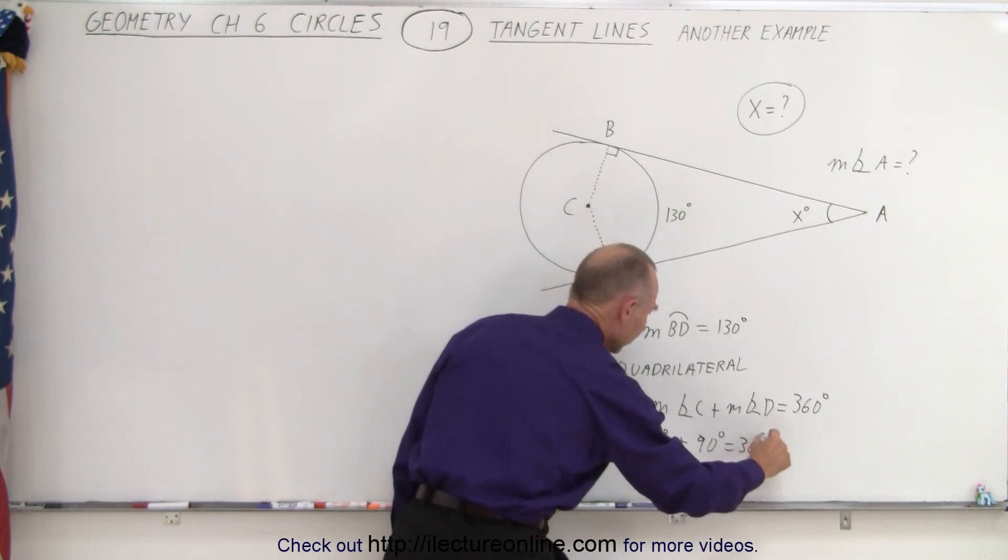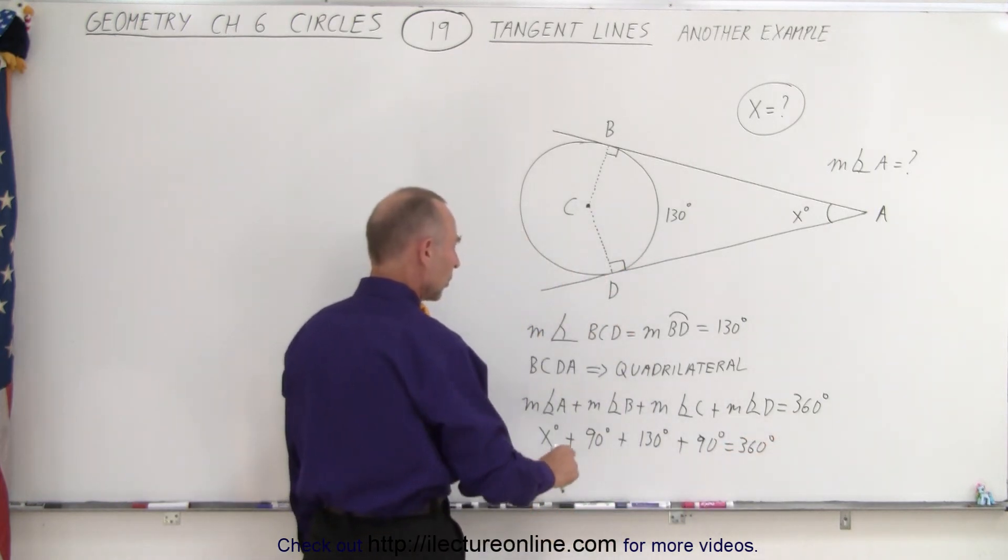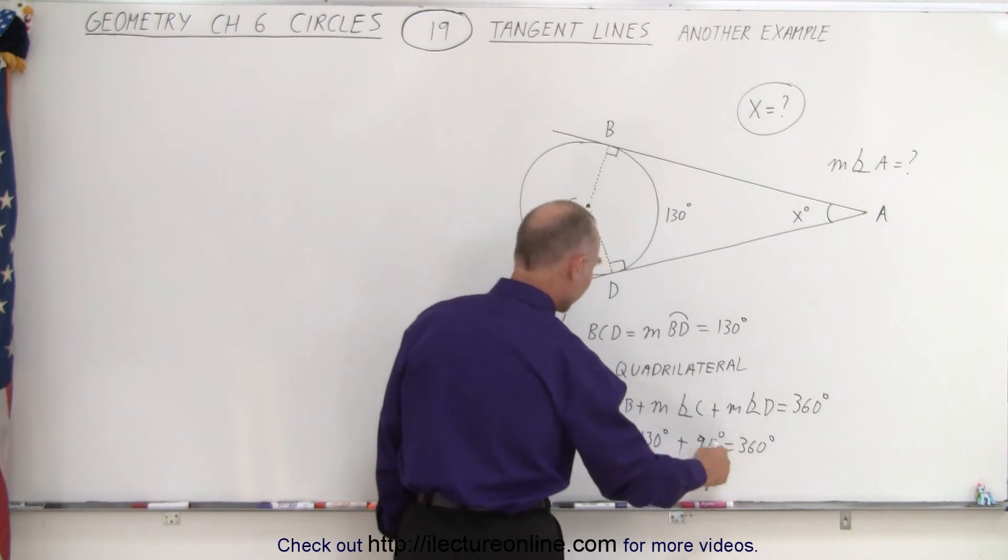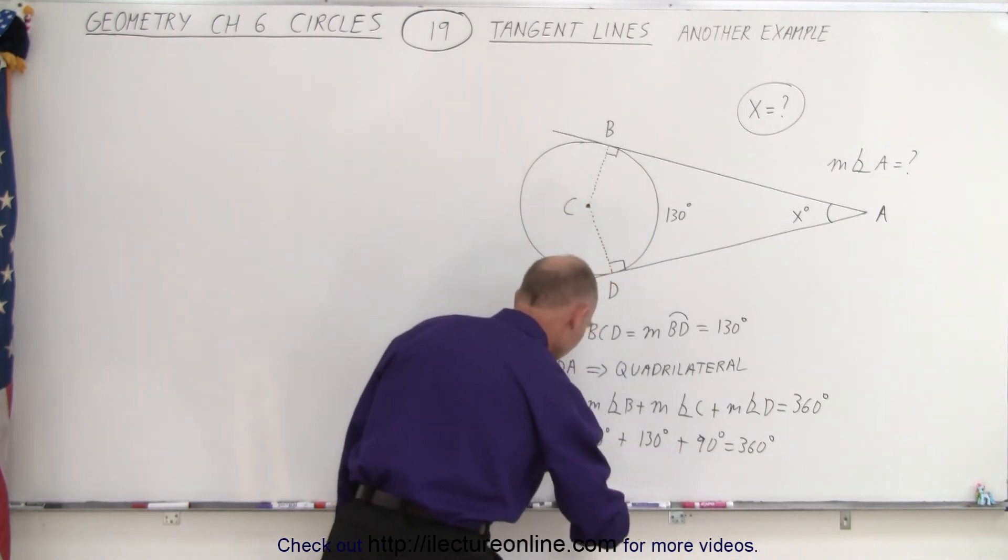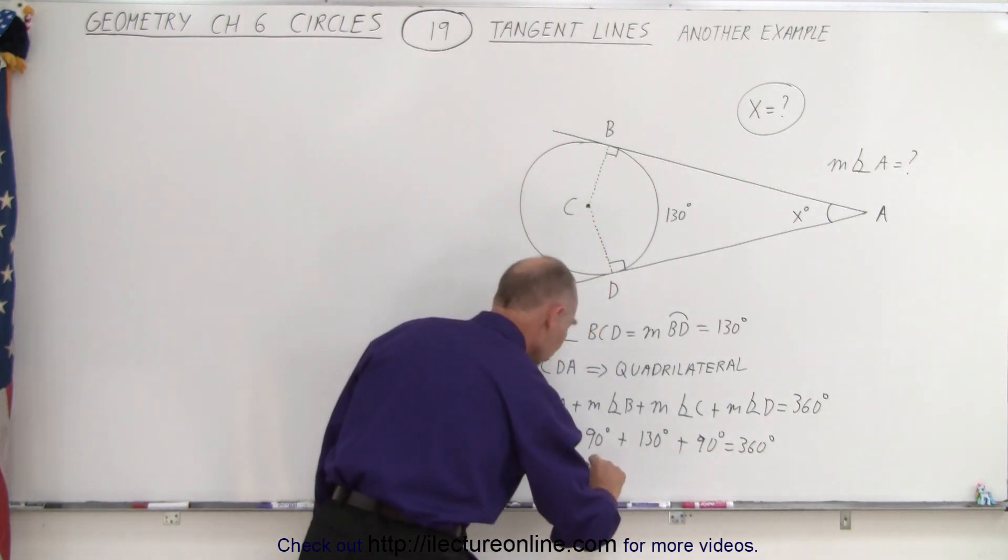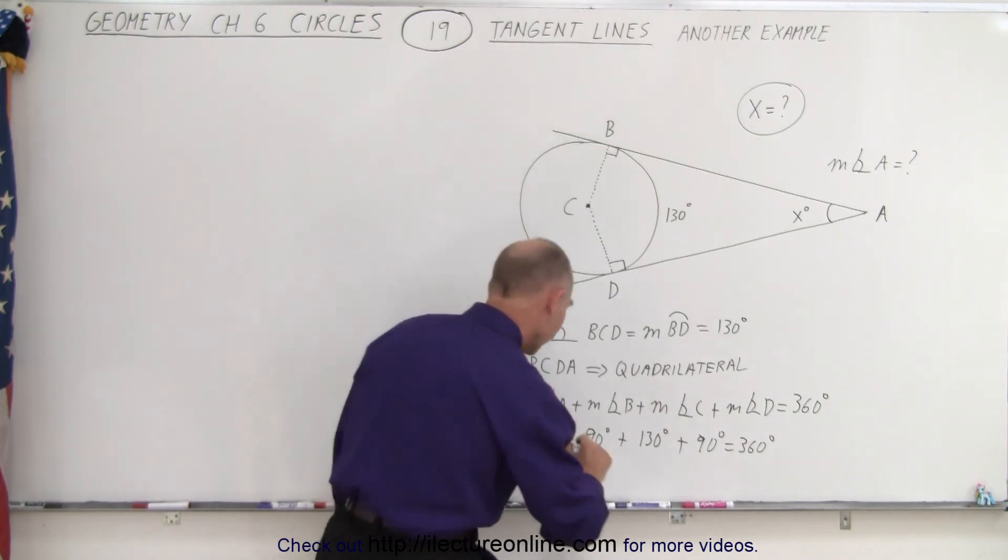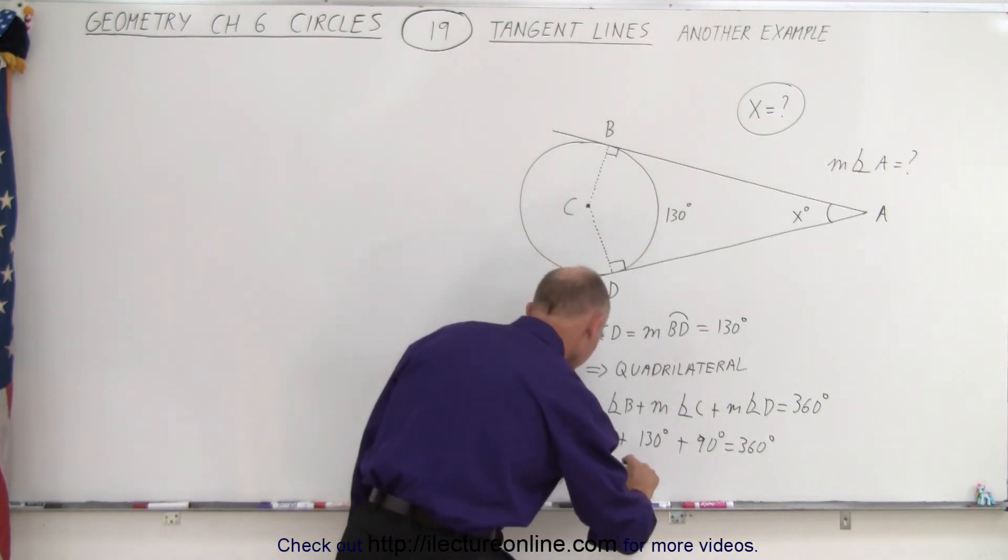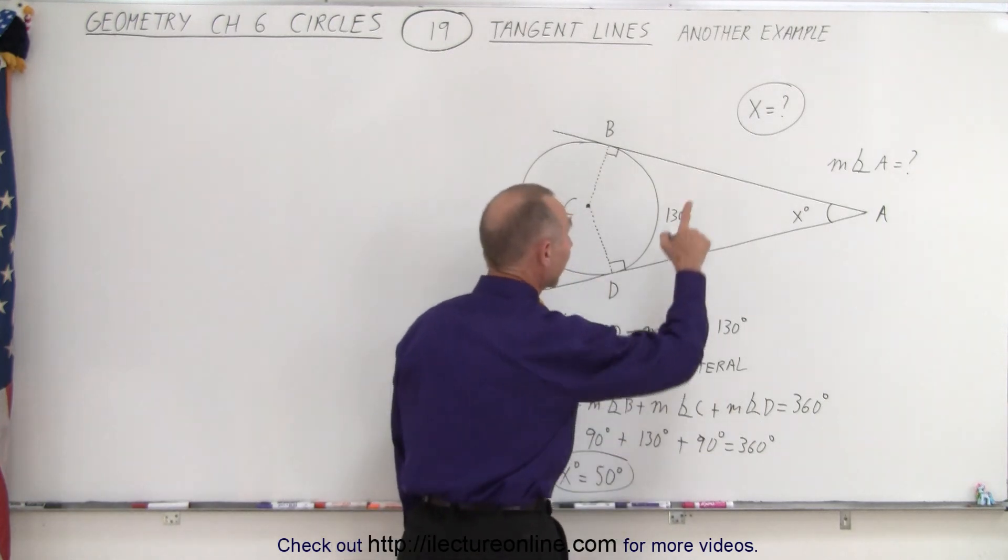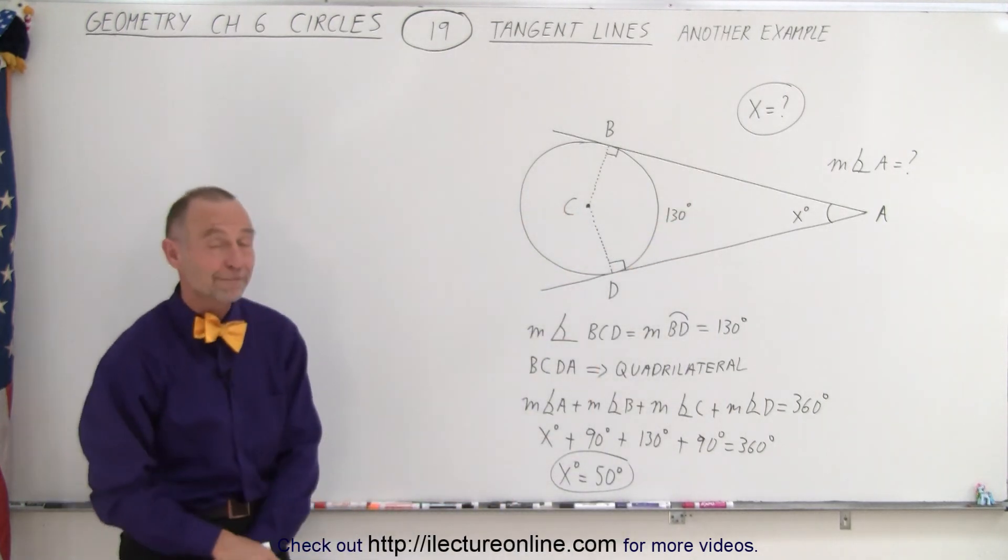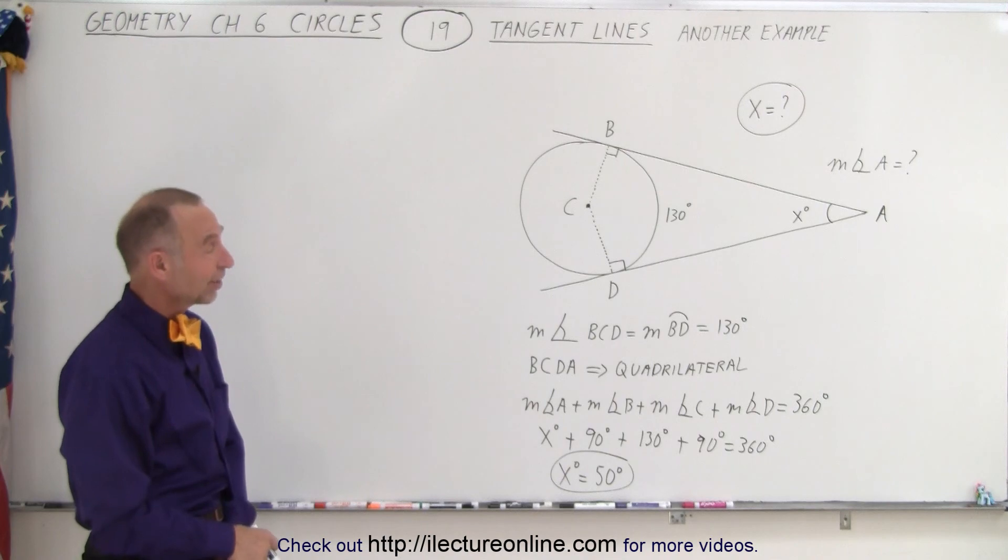That adds up to 360 degrees. Now, when we subtract these two from that we get 180, subtract 130 we get x equals 50 degrees. I have to think about it for a moment. So therefore, x equals 50. And that is how it's done.